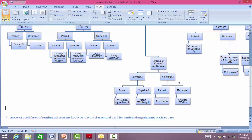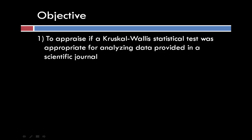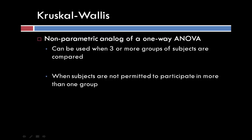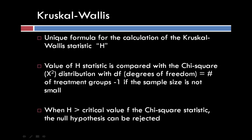For the Kruskal-Wallis, this data is unpaired data. The Kruskal-Wallis test is a non-parametric analog of a one-way ANOVA, and it can be used when there are three or more groups of subjects to be compared. It is also used when subjects are not permitted to participate in more than one group, so they are independent. It has its own unique formula for the calculation of the Kruskal-Wallis statistic known as H.